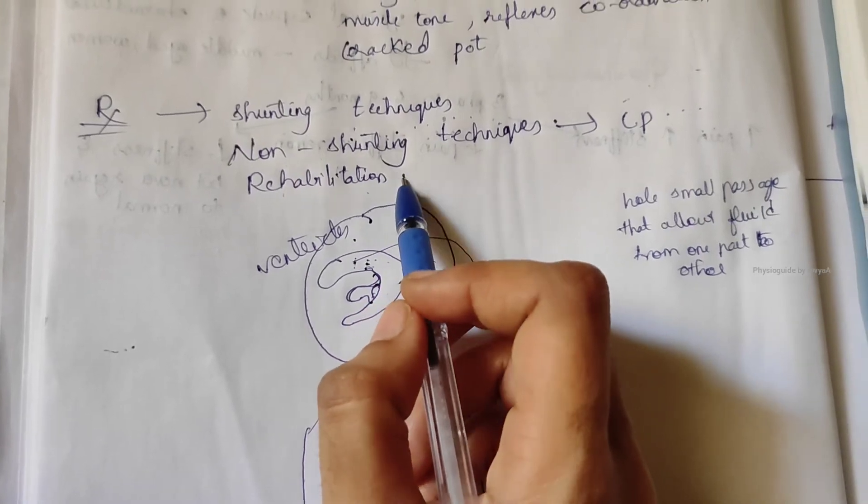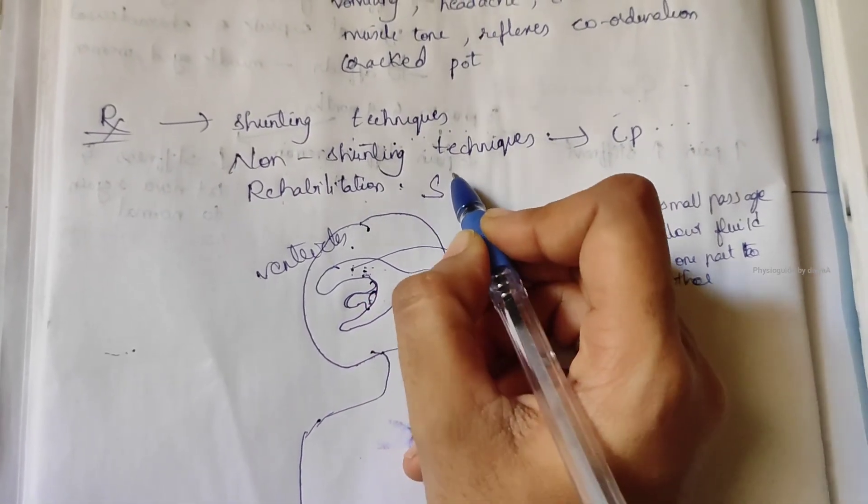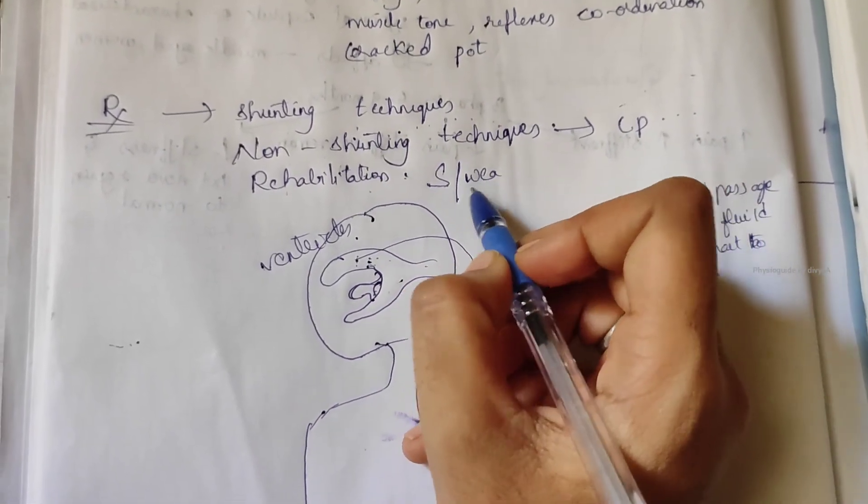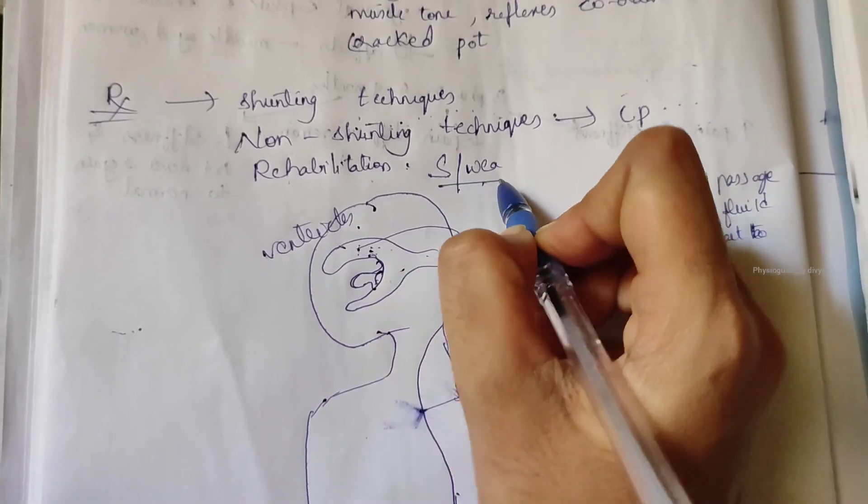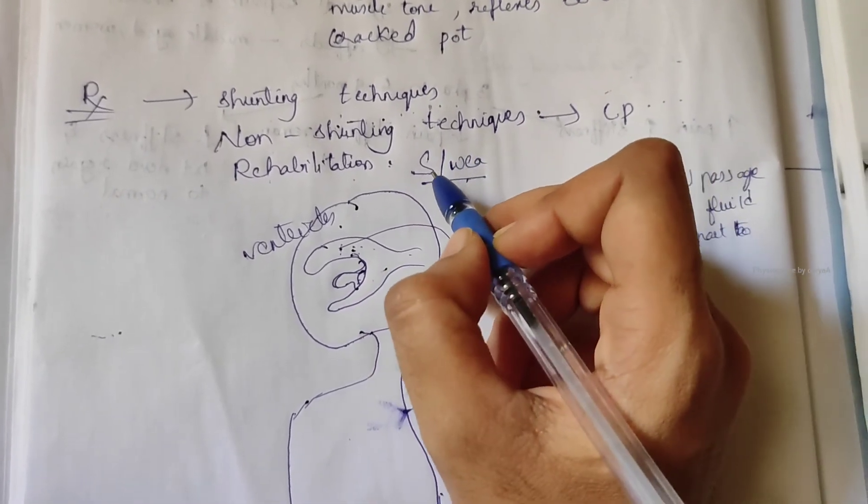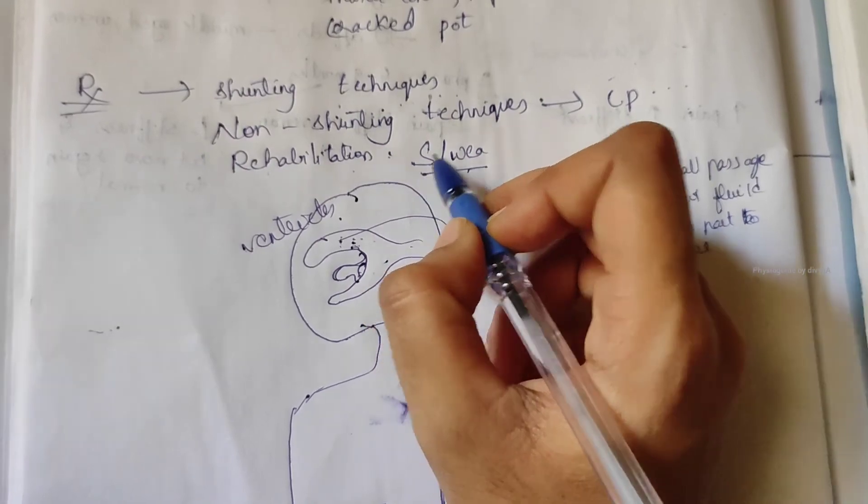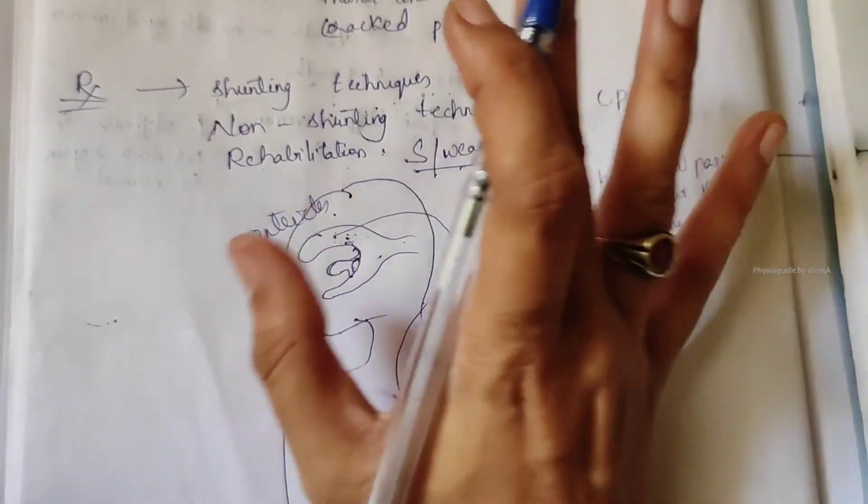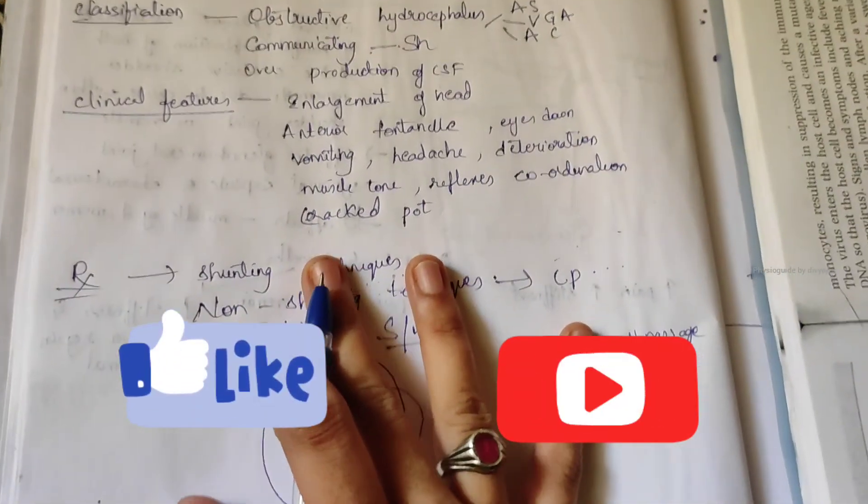Rehabilitation is done according to the residual spasticity or weakness. Based on that, rehabilitation should be suggested and done based on the severity of spasticity and weakness. I hope you understood this topic. Thank you for watching this video.